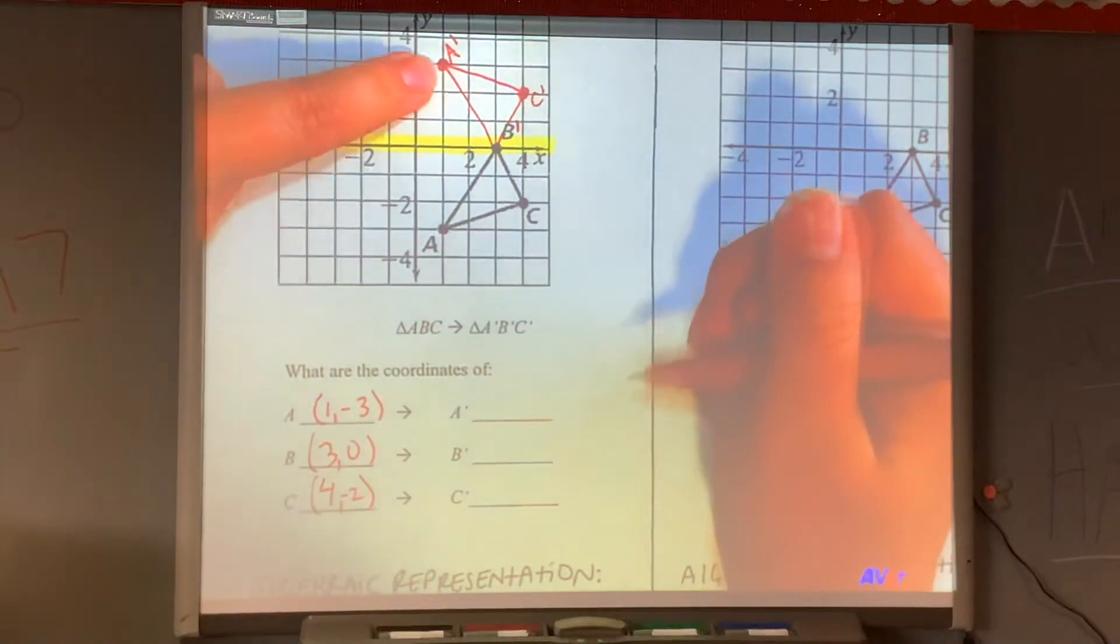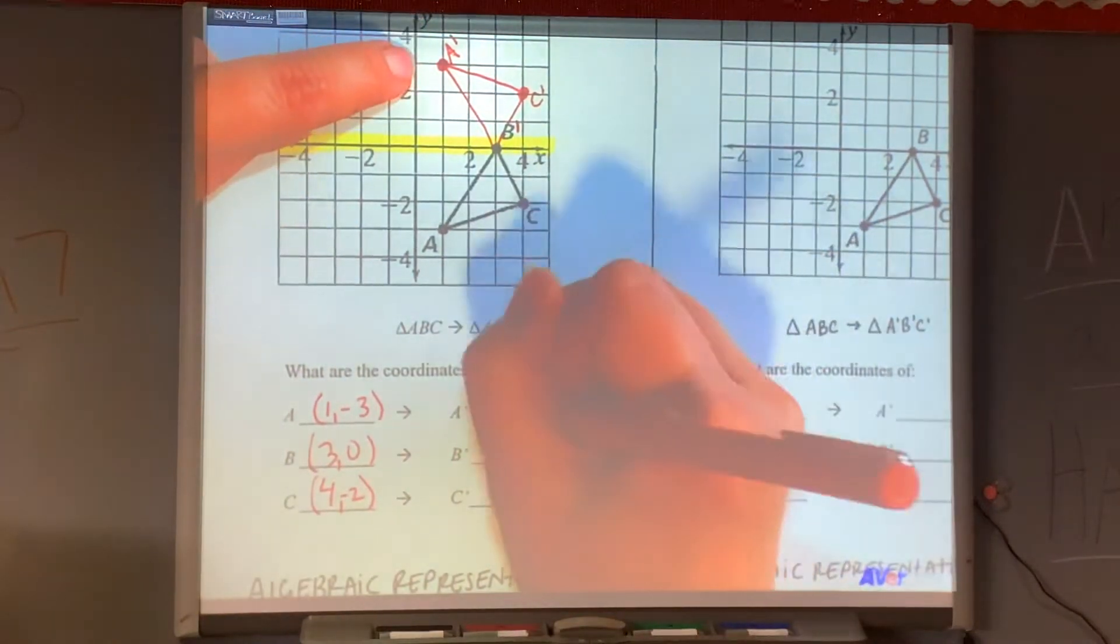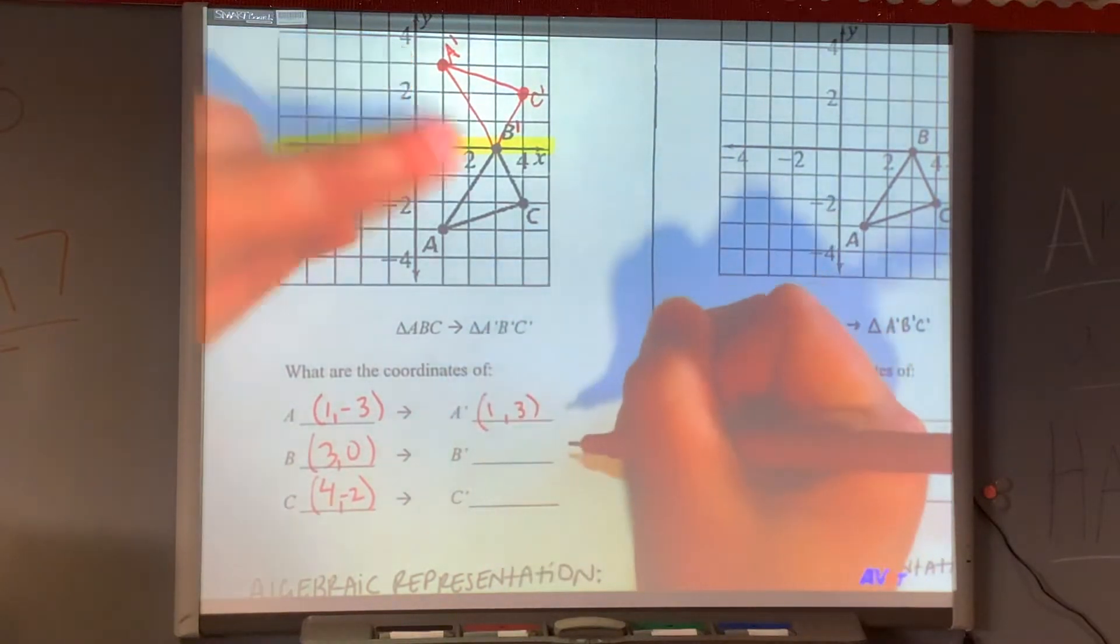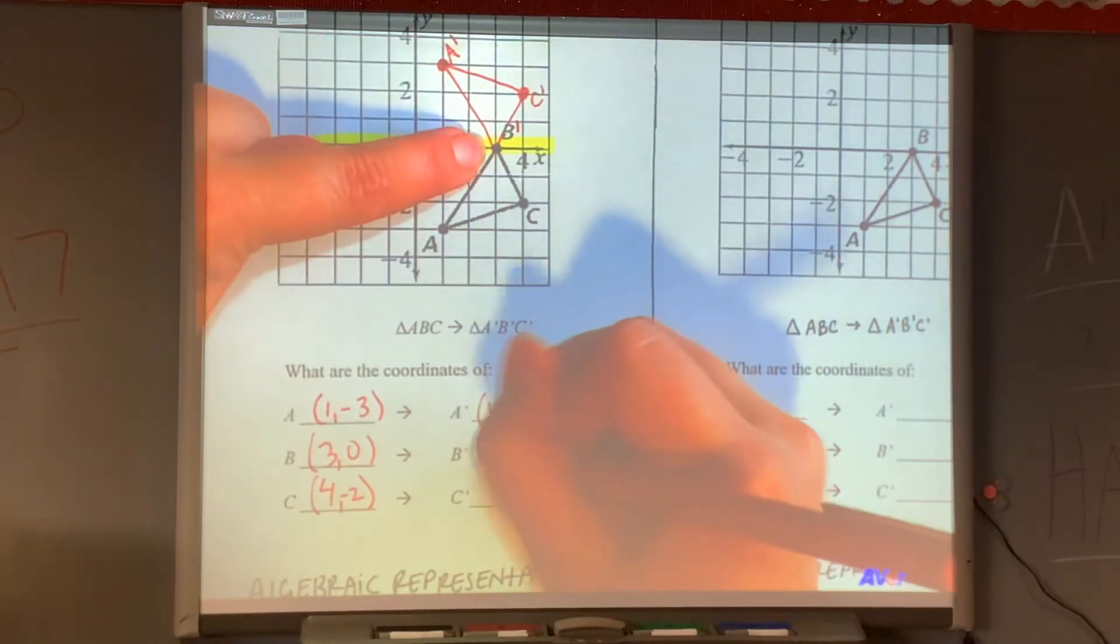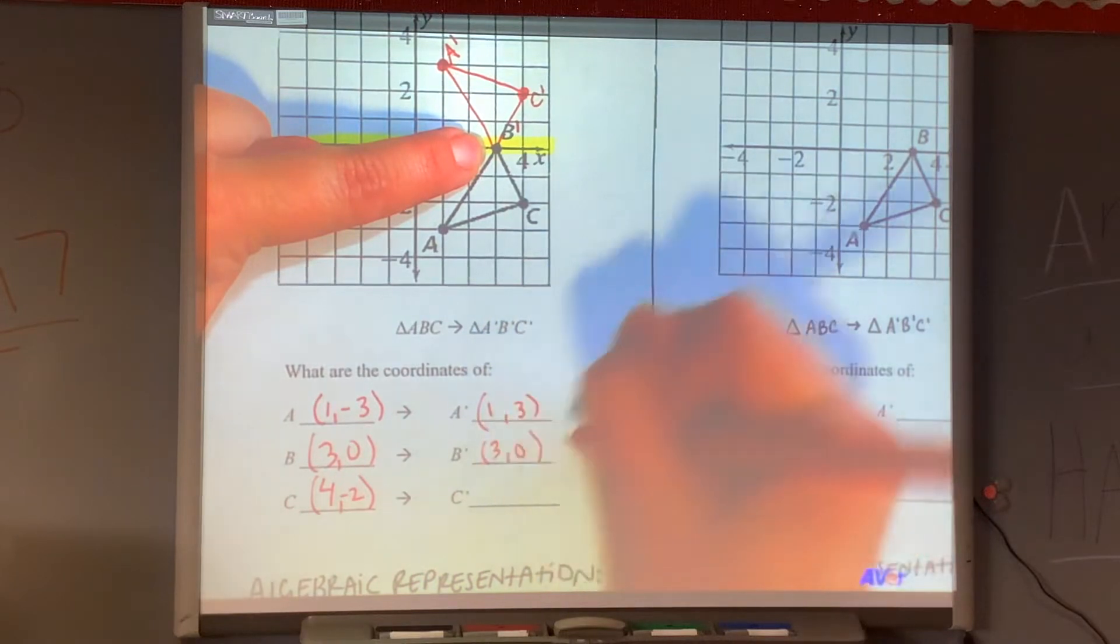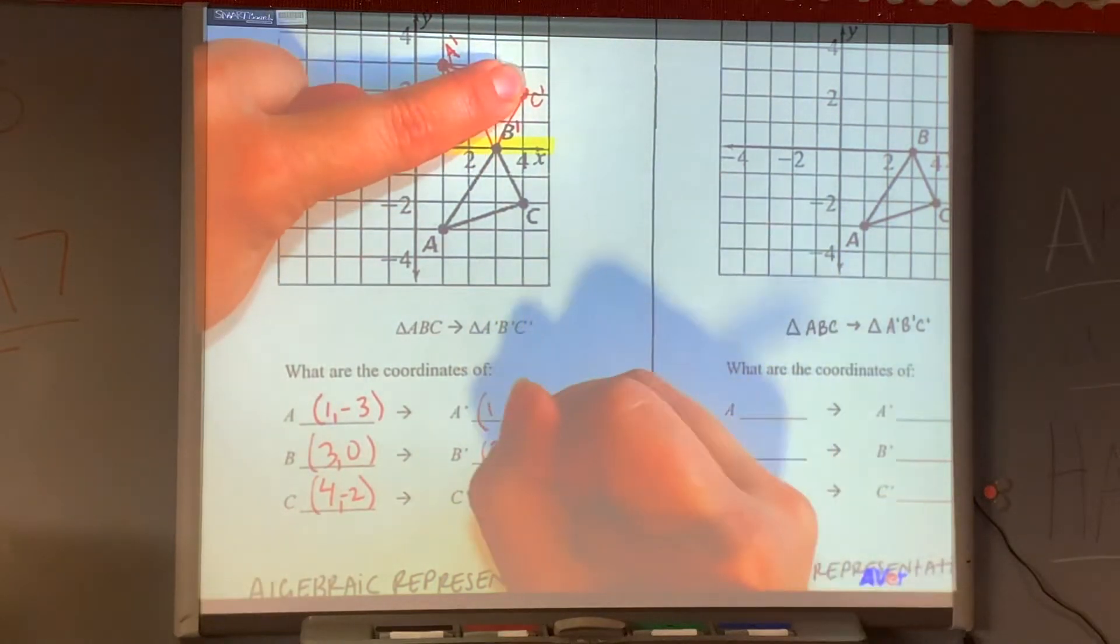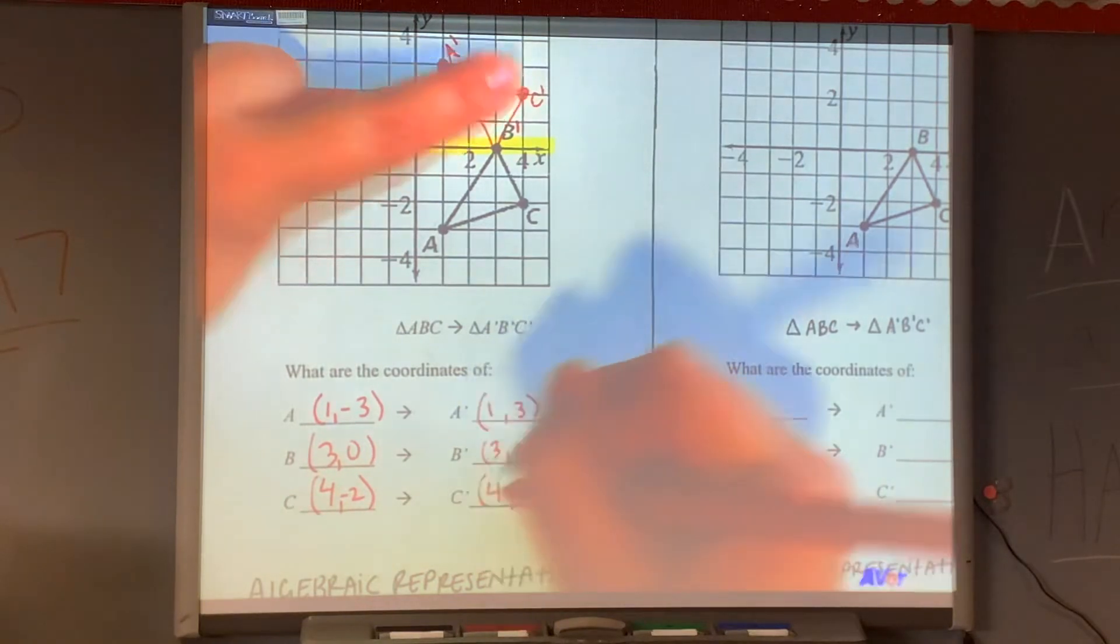My new A is... I mean, (1, 3). Sorry, guys. The new B is (3, 0). And the new C is (4, 2).